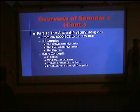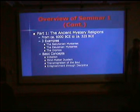We'll look at three examples of ancient mystery religions: first, the Babylonian mysteries; then the Eleusinian mysteries; and then the Orphics. Next, we'll take a look at the basic concepts of the ancient mystery religions. There are four common to all of them: first, initiation; second, mind-matter dualism; third, transmigration of the soul; and fourth, enlightenment through various disciplines.